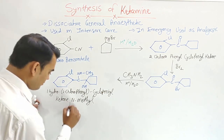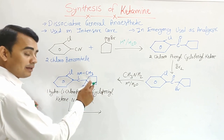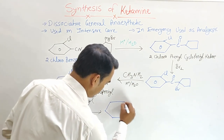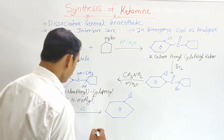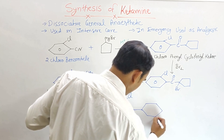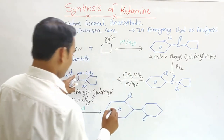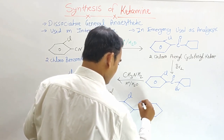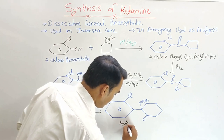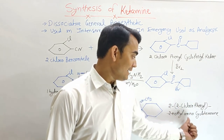When this intermediate is heated at a higher temperature, the 5-membered ring becomes an unsaturated 6-membered ring, and the final product is ketamine. The phenyl ring has a chlorine substitution, and there is a ketone group with an NH–CH3. The IUPAC name of ketamine is 2-(2-chlorophenyl)-2-(methylamino)cyclohexanone.